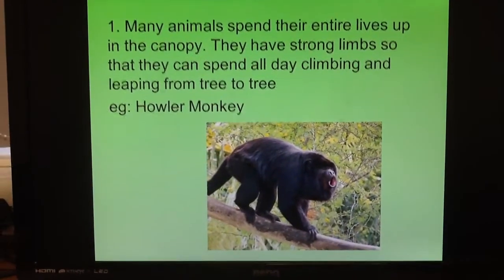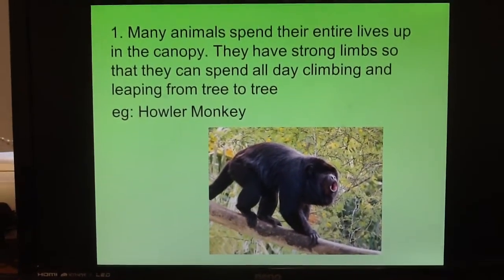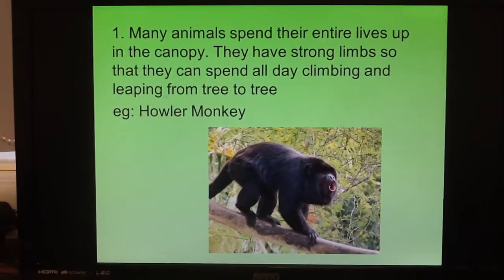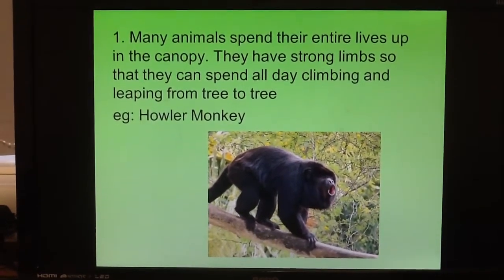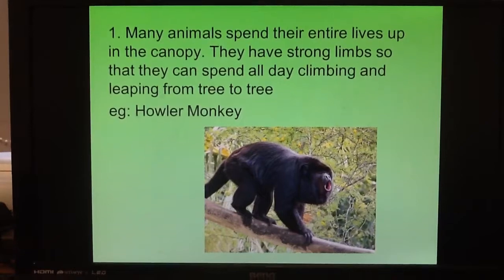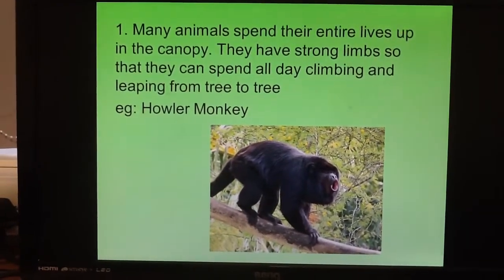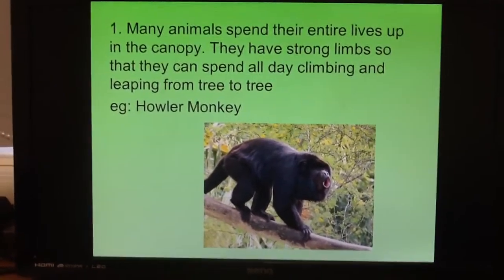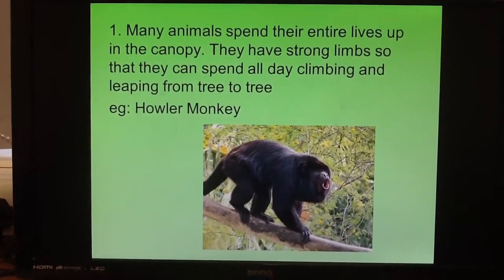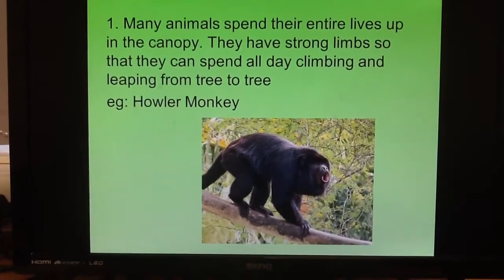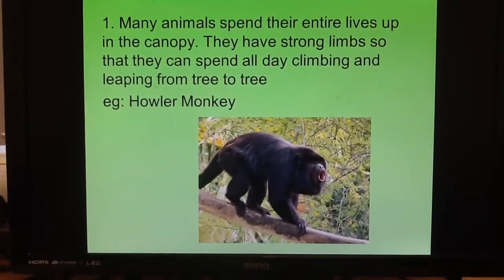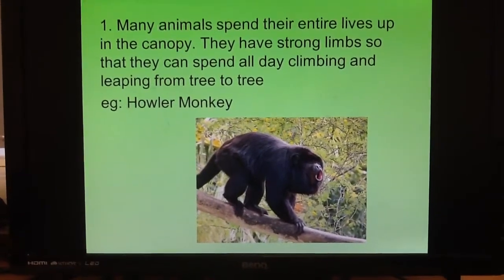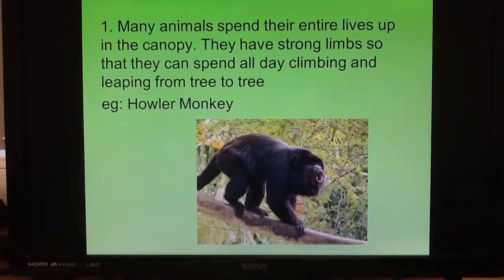Number one: lots of animals in the rainforest actually live up in the canopy and spend most of their lives there. In order to do this, they need quite strong limbs — strong arms and legs — and they need to be able to grab hold of different branches and swing from them. This is an adaptation that allows them to live there, and one example is the howler monkey, though we could include lots of other types of monkey in the rainforest.